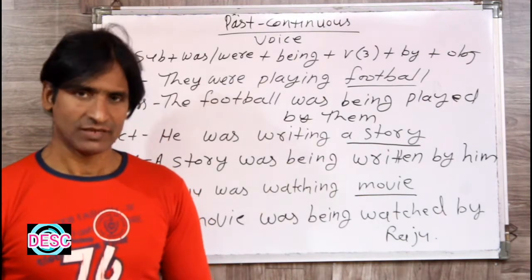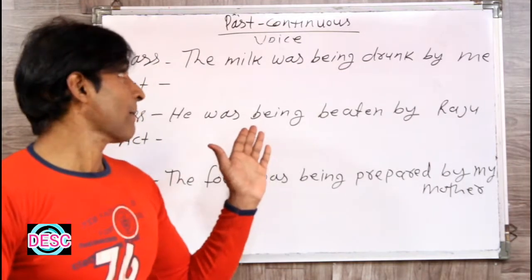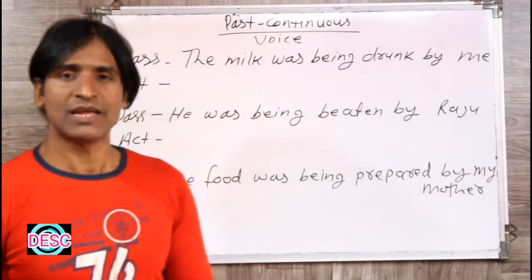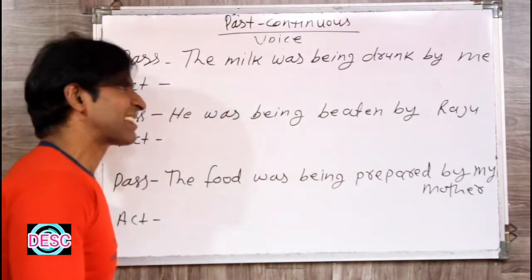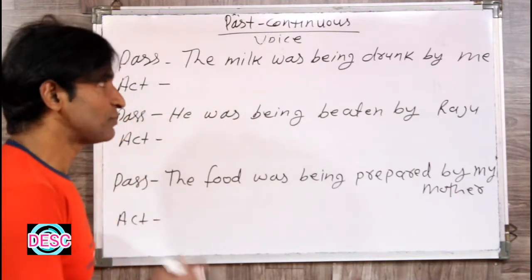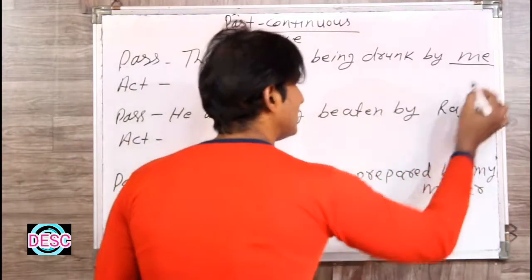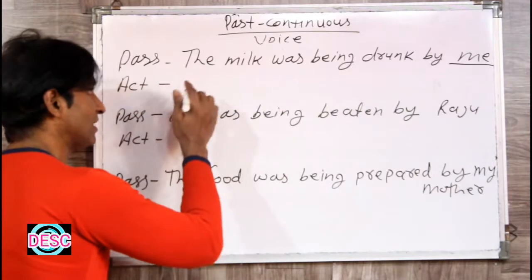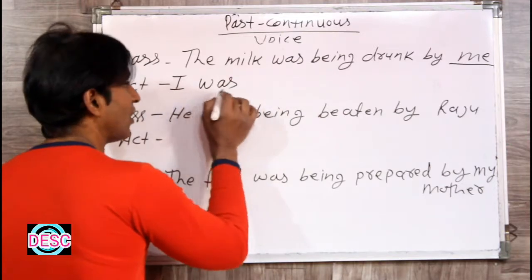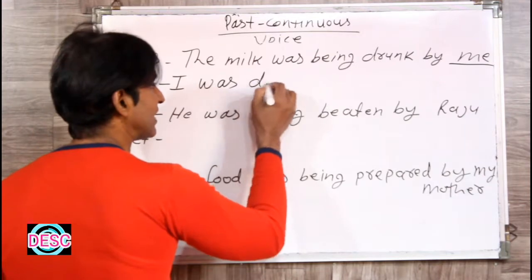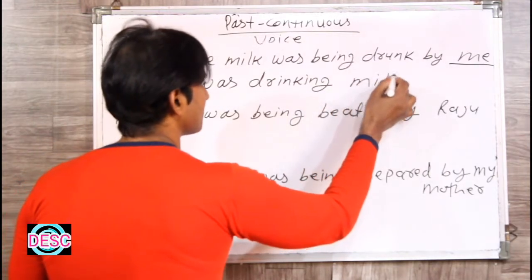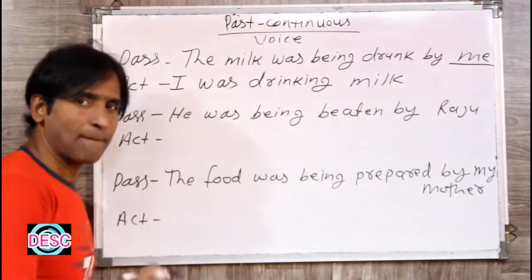Passive to active — ok friends. Yeh rahe past continuous tense ke passive sentences. Ab hum inko active banana sikhenge — ki hum inko active mein kaise turn karte hain. 'The milk was being drunk by me.' Doodh mere dwara piya ja raha tha. By ke baad 'me' aa raha hai, so 'me' is the object. Me ka subject hoga 'I', aur I ke saath 'was' lagta hai. Passive 'being' hat jayega, so: I was drinking milk.